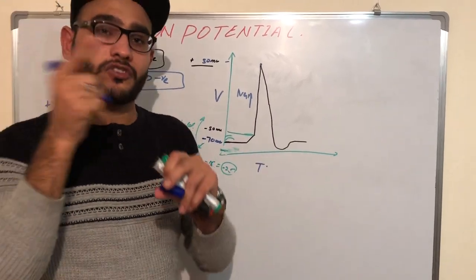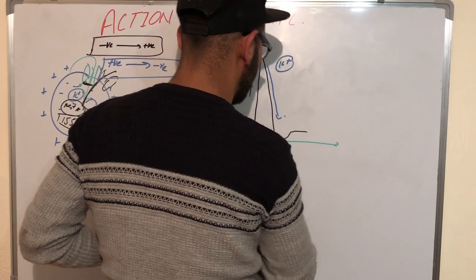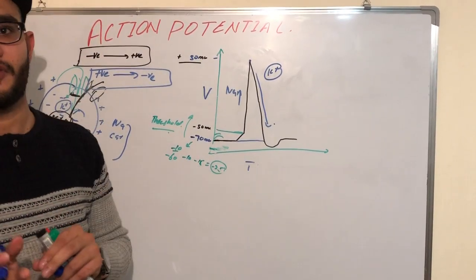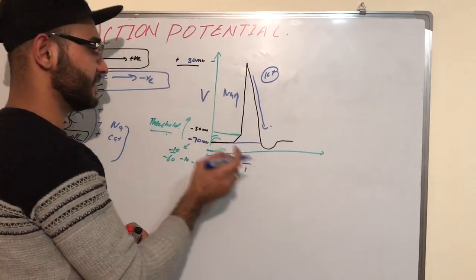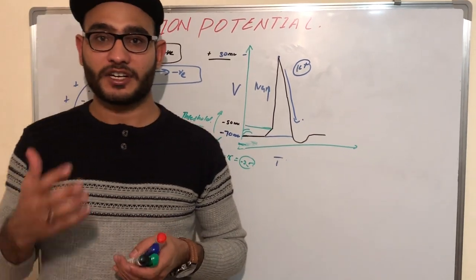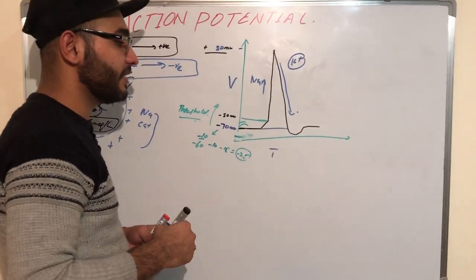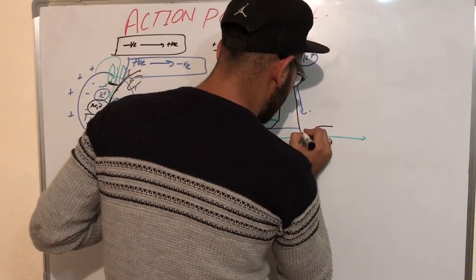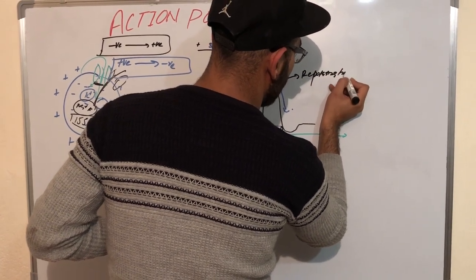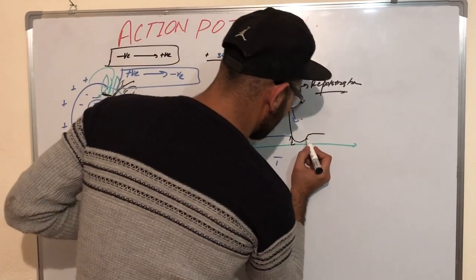Potassium efflux — movement from inside to outside — occurs and this shows repolarization. But the cell does not stop at minus 70 millivolts; it goes below minus 70. The reason is that the potassium channel takes some more time to close. When the potassium channel takes more time to close, the electronegativity becomes higher inside the cell, and this is known as hyperpolarization — hyper meaning high, so hyperpolarization means more negativity inside the cell.